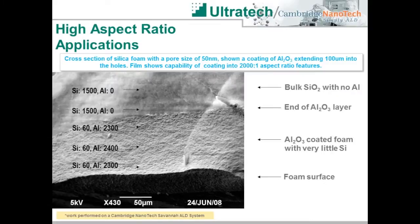A more extreme example of high aspect ratio coating is illustrated in the SEM shown here. Depicted is a cross-section of silica foam which has pore sizes of 50 nanometers. The silica foam was exposed to a TMA-water exposure mode process in a Cambridge Nanotech Savannah system. The SEM shows successful infiltration of the aluminum oxide ALD process into the top 100 microns of the silica foam material. 50 nanometer pores coated to a depth of 100 microns represents an aspect ratio of 2000 to 1.